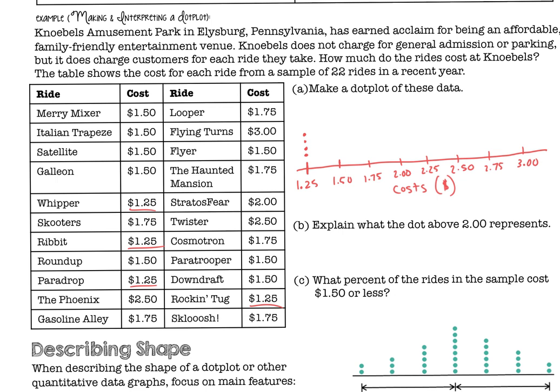So now you should have noticed that $1.50 occurs eight times. So we want to draw eight dots. You should have noticed that $1.75 occurred six times. $2.00 occurred one time. There was nothing for $2.25. $2.50 was for two rides, and then finally $3.00 had one. So there's your dot plot.